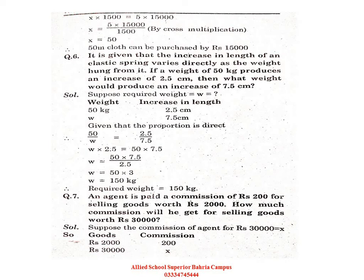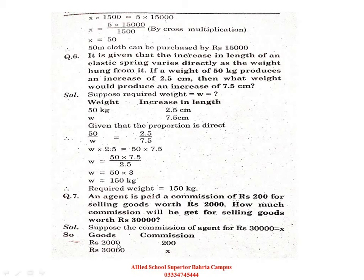The unknown value we consider as X. Goods: 2000, commission: 200. Goods become 30 thousand — what will the commission be? Think carefully: if you sell goods worth 2000 rupees and get 200 commission, and now you sell goods worth 30 thousand rupees — the amount has increased from 2000 to 30 thousand — so ultimately the commission will also increase. One ratio increases, the other also increases — according to the definition of direct variation, this is direct variation.